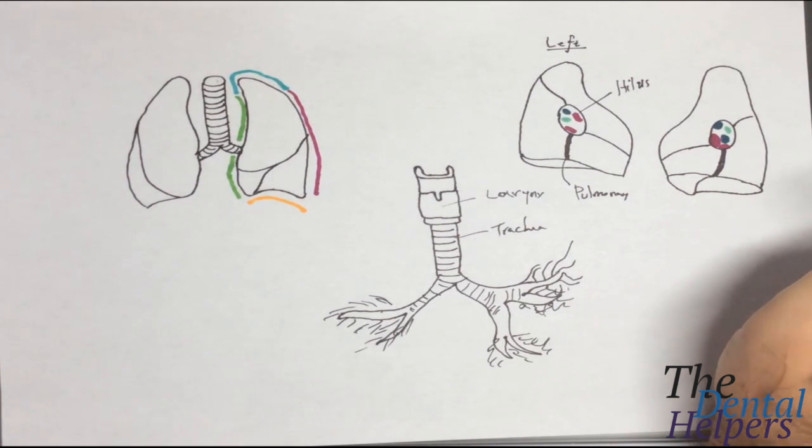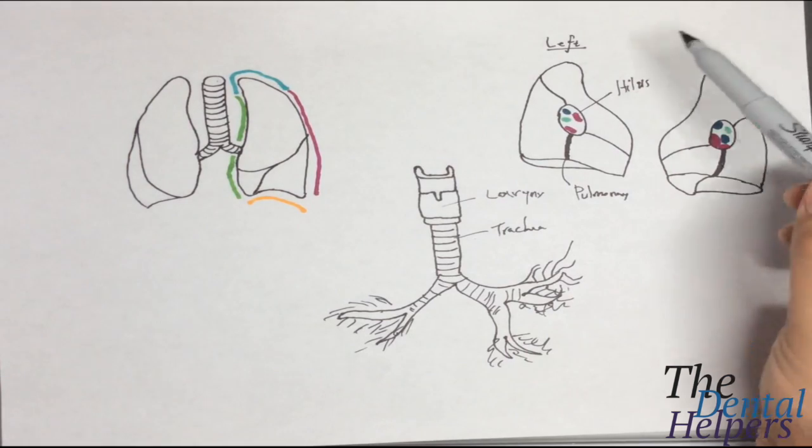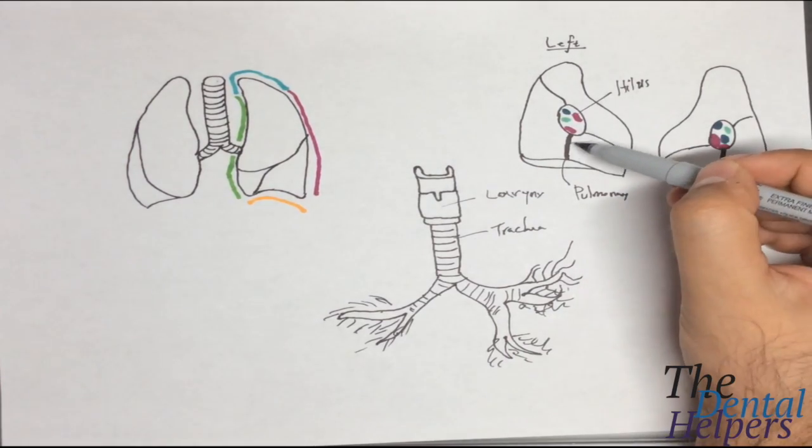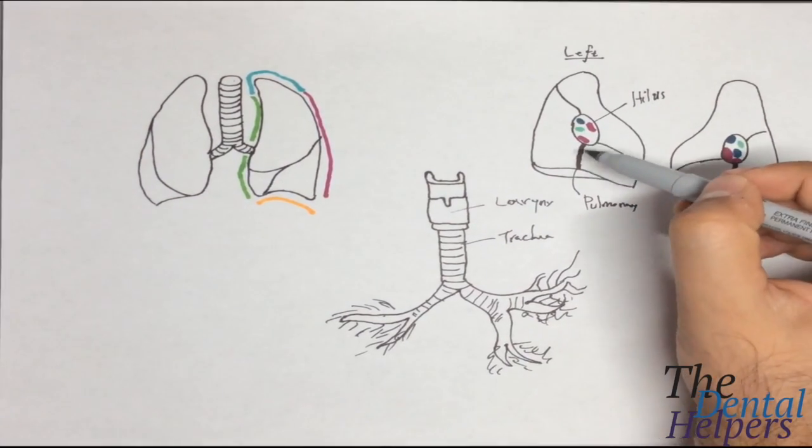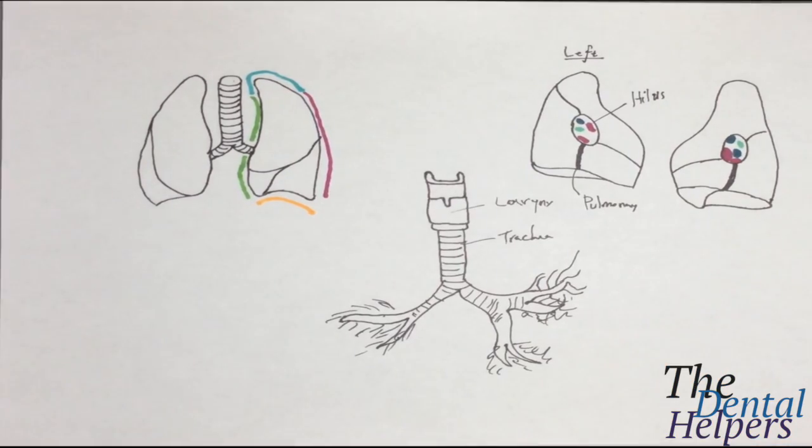The pulmonary ligament is going to be two layers of parietal pleura. As I said, the pulmonary ligament is going to be a lot thicker, and I've color coded this again with our arteries and our veins.